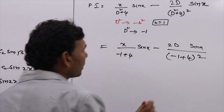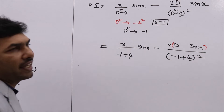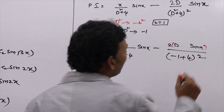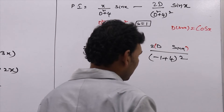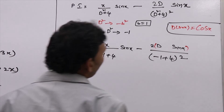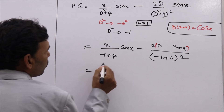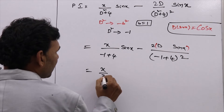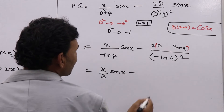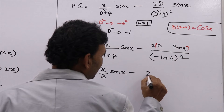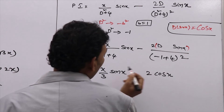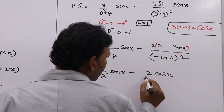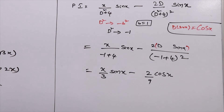We know that the differentiation of sin(x) is cos(x), so D·sin(x) = cos(x). Therefore the particular integral becomes: x/3 · sin(x) minus 2·cos(x)/9. This is the particular integral for the first example.